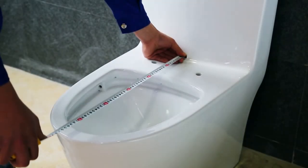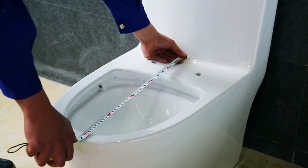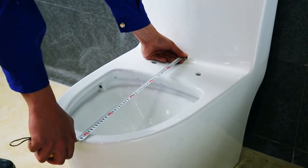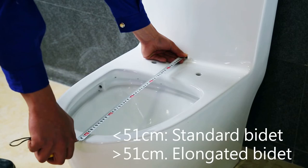Now let's show you how to choose the right bidet. In the beginning, measure the installation distance from water tank to front end of toilet bowl. If the distance is less than 50 cm, you should choose standard model. If the distance is more than 51 cm, you should choose elongated model.